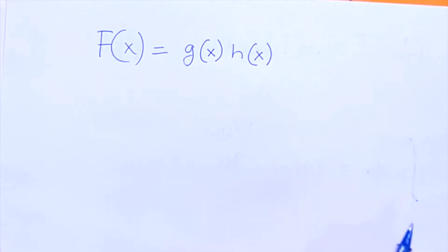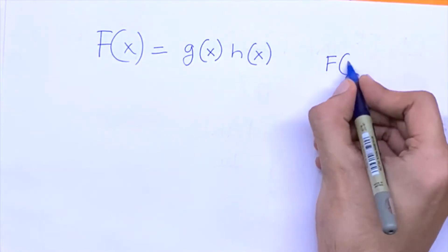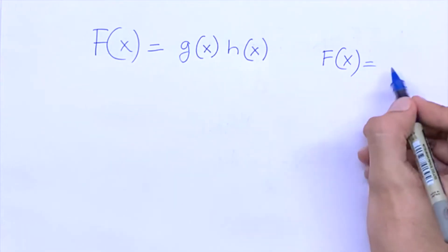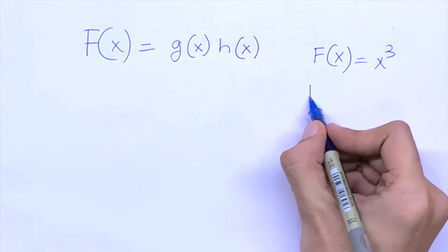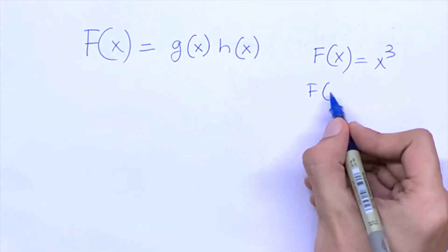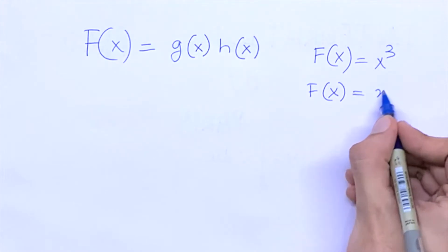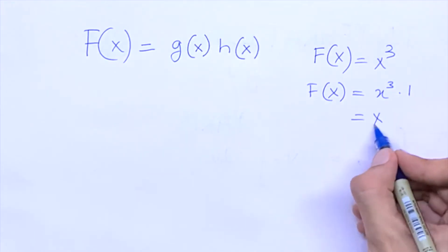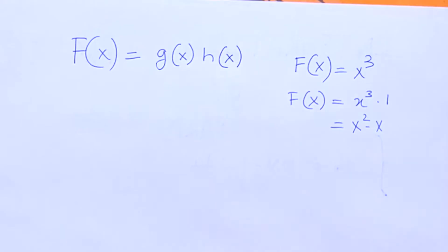Let me give you an example. Let's say we have f of x is equal to x cubed. We can write that as f of x is equal to x cubed times one, or we can write that as x squared times x. There are many ways to write it.